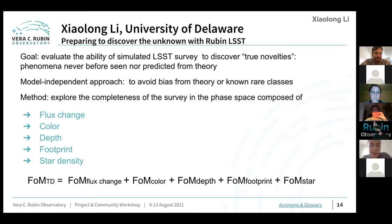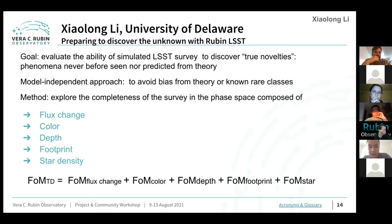Evaluation of the ability to make common discoveries is challenging because it requires a model-independent approach to avoid bias from theory or unknown rare classes. We approach this by exploring the completeness of the survey in a feature space defined by five components: flux change, color, depth, footprint, and star density. We concatenate all five feature matrices as the overall feature matrix for unknown phenomena.